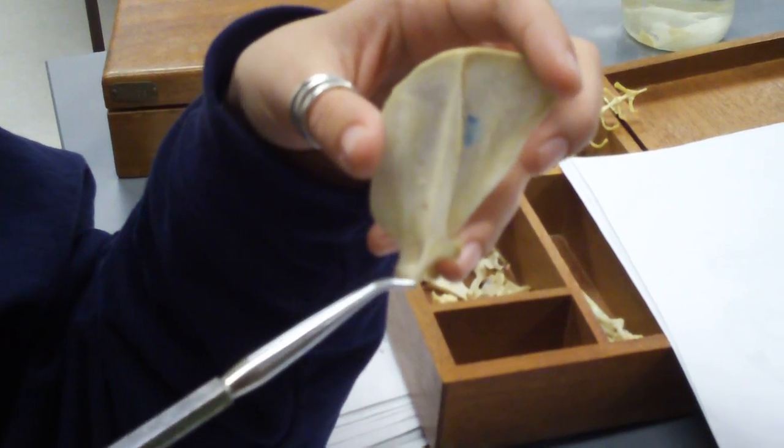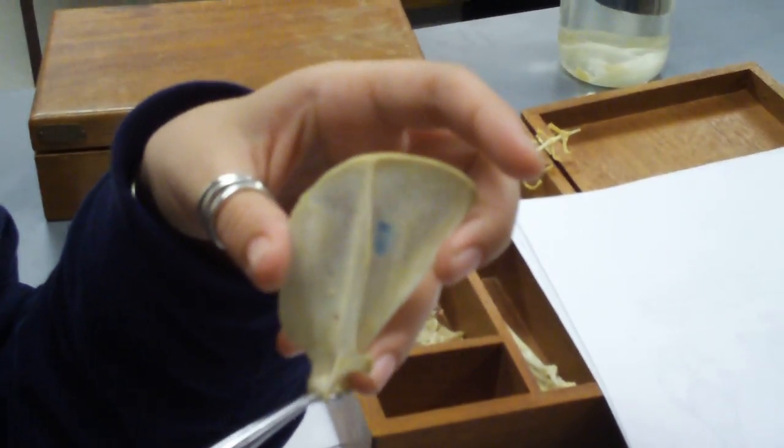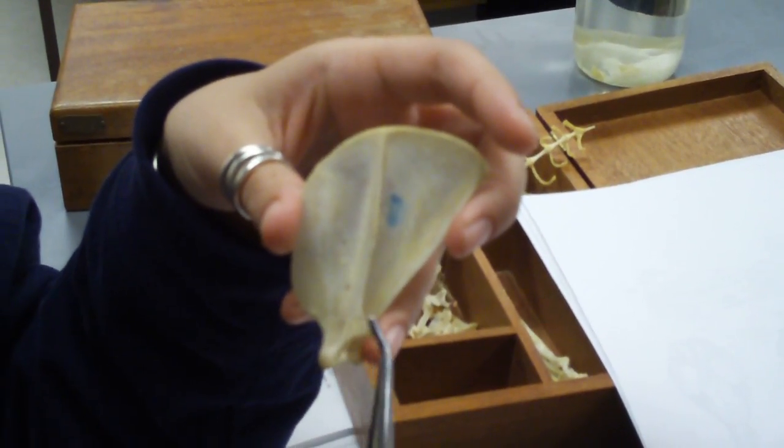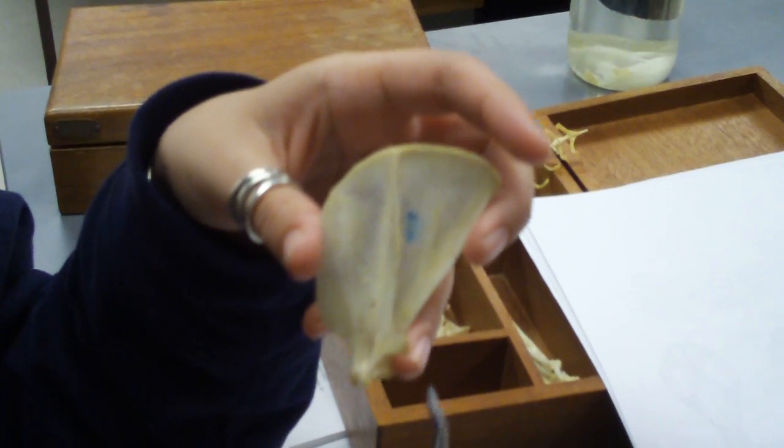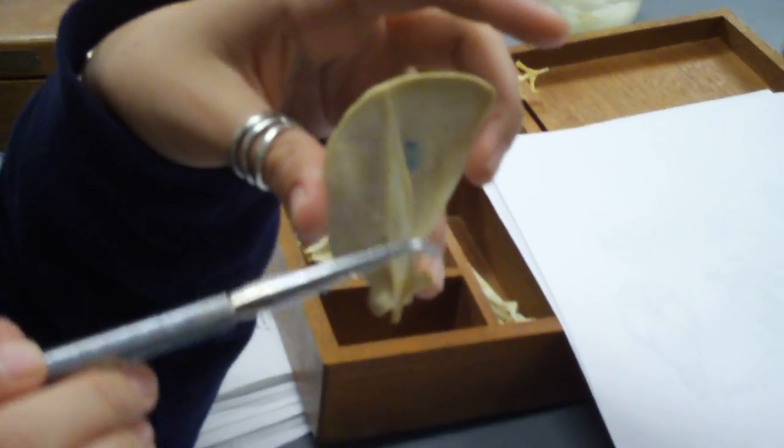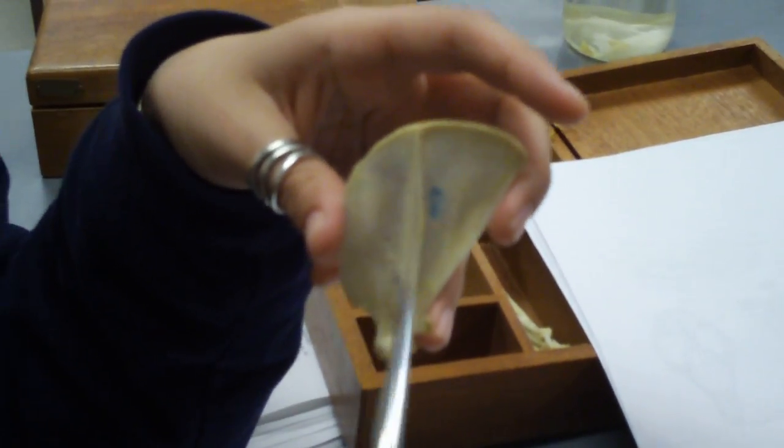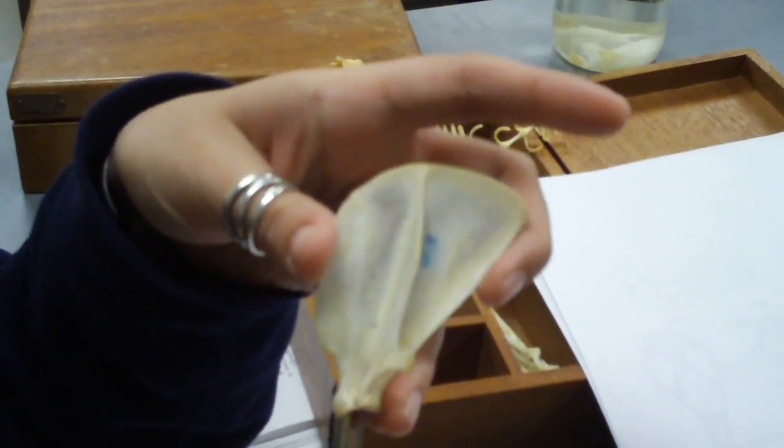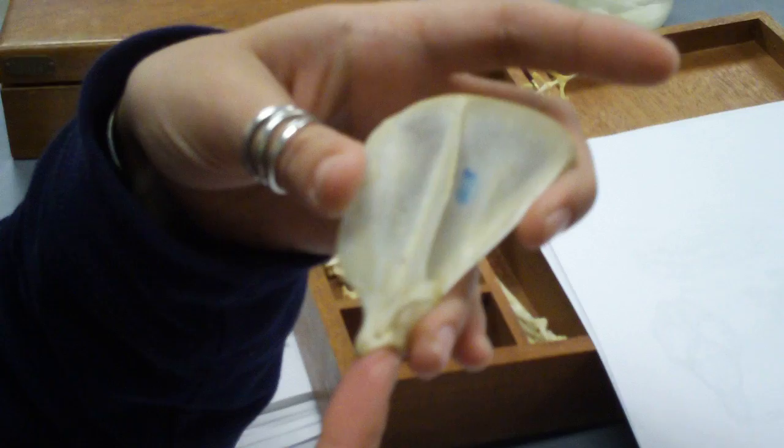You have your acromion process sticking off down here. This is your metachromion process sticking out to the side. This is your scapular spine because it acts as a little spine. This is where a lot of muscle attachment goes. And then this region right here, where it articulates with the humerus, is the glenoid fossa.